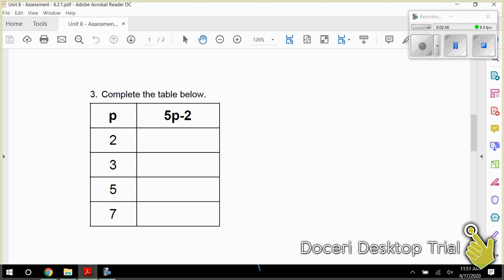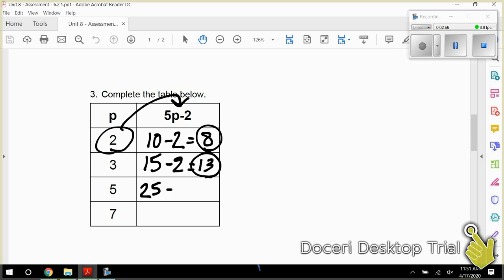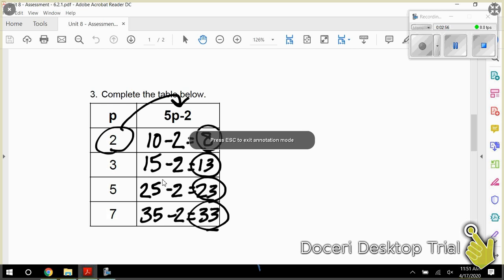We have to complete the table. So all we're going to do is take these numbers and plug them in. So 5 times 2 is 10, minus 2 is 8. 3 times 5 is 15, minus 2 is 13. 5 times 5 is 25, minus 2 is 23. 7 times 5 is 35, minus 2 is 33. So the numbers that I circled are the answers. You're just taking these numbers over here and plugging them in right here for P. So that's how you should have done number 3.